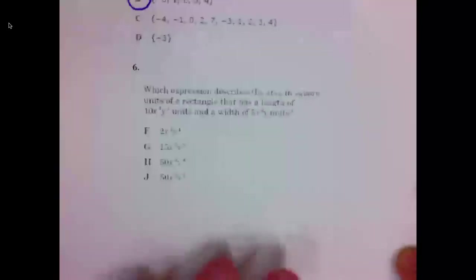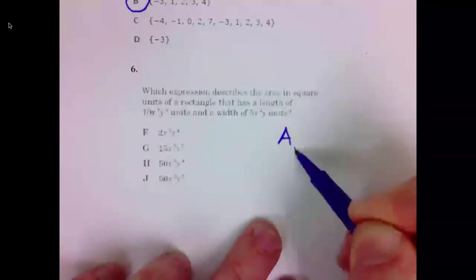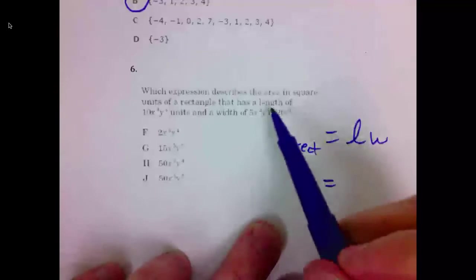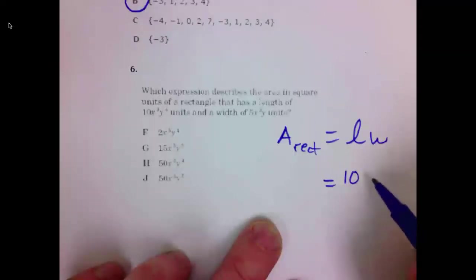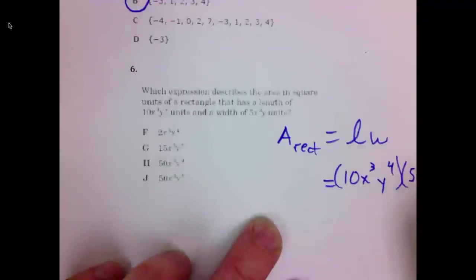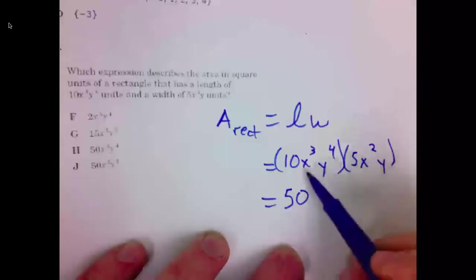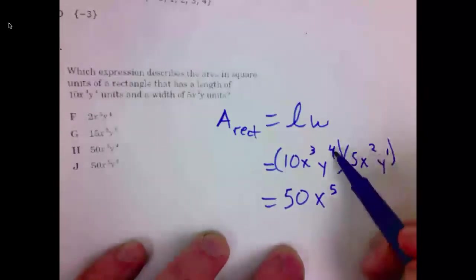Number six. Which expression represents the area in square units of a rectangle? Well, area of a rectangle is length times width. They're giving us the length as 10X to the third, Y to the fourth, and they're giving us a width of 5X squared Y. So this product, 10 times 5 is 50. Remember, when multiplying, we add exponents. So X cubed times X squared is X to the fifth.